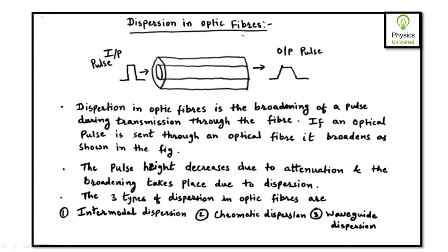Next is dispersion in optic fibers. Here you can see the dispersion in optic fibers — when you give the input pulse, which is quite a square pulse, look at what happens to the output pulse. You can see the broadening of the output pulse as compared to the input pulse. This broadening is known as dispersion. The pulse height decreases due to attenuation and the broadening takes place due to dispersion.